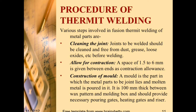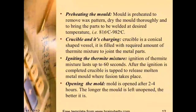Step 3, construction of mould — a mould is the part in which the metal parts to be joined lie and molten metal is poured into it. It is 100 mm thick between the wax pattern and the moulding box, and should provide necessary pouring gates, heating gates, and risers. Step 4, preheating the mould — the mould is preheated to remove the wax pattern, dry the mould thoroughly, and to bring the parts to be welded to the desired temperature, i.e., 816°C to 982°C.